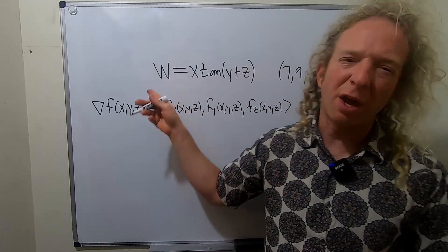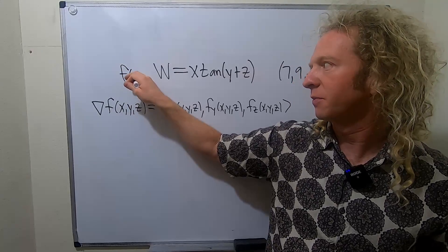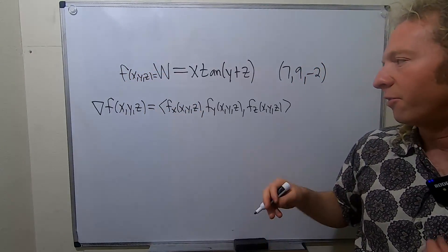Okay, so in this problem here, you can think of your w as your f of x, y, z. So this is really f of x, y, z. It's a function of three variables.